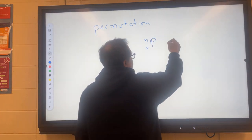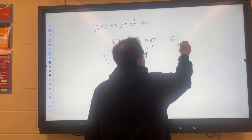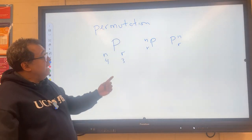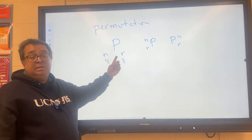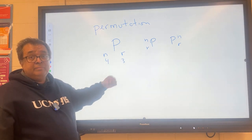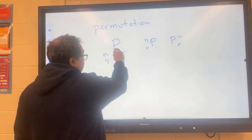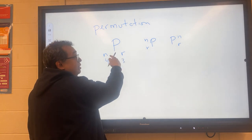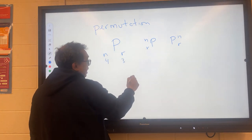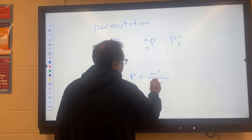and it's also sometimes written like this. But these three things mean the same thing, and this is the way I've seen it most commonly written, so I'm going to write it like that. And the formula for this nPr is going to be n factorial over n minus r factorial.